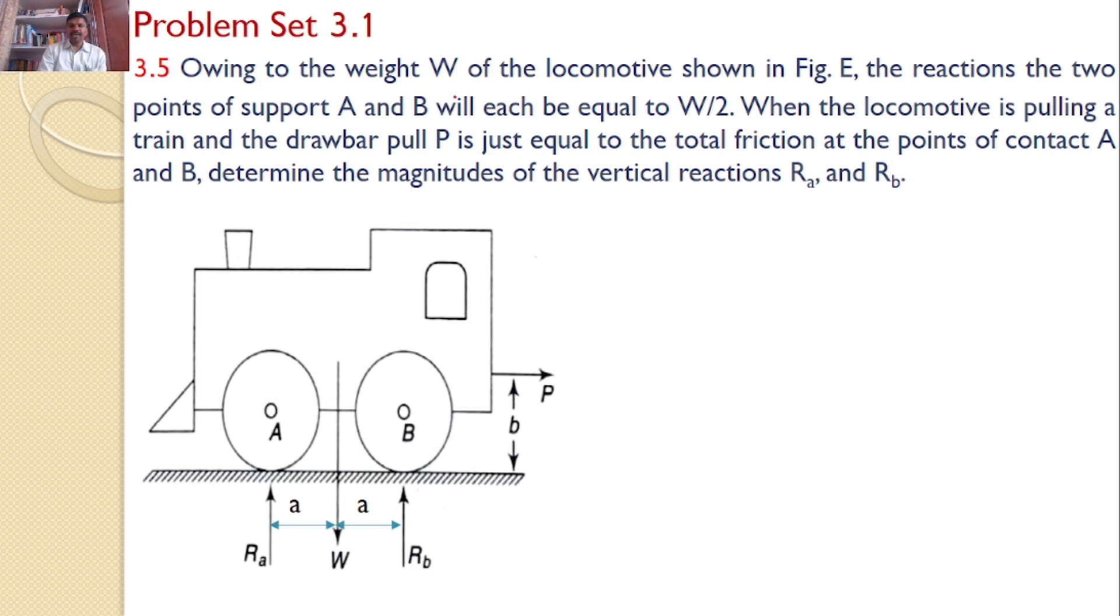Owing to the weight W of the locomotive shown in the figure, the reactions of the two points of support A and B will be equal to W by 2. When the locomotive is pulling a train and the drawbar pull P is just equal to the total friction at the points of contact A and B, determine the magnitudes of the vertical reactions Ra and Rb.